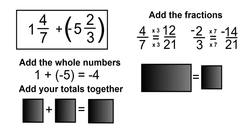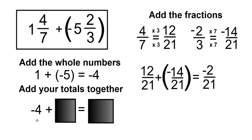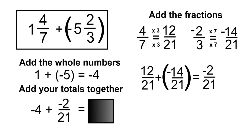Now we can add the fractions because we have a common denominator. So 12 over 21 plus negative 14 over 21. Negative 14 plus 12 is going to be negative 2, and that's going to be over the denominator of 21, so the answer is negative 2 over 21. Now we'll add our totals together — negative 4 plus negative 2 over 21 is going to be negative 4 and 2 over 21.